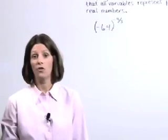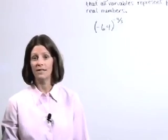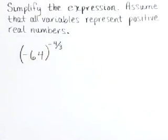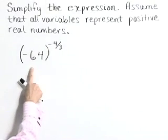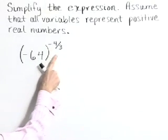Simplify the expression. Assume that all variables represent positive real numbers. Here we have negative 64 quantity to the negative 4 thirds power.